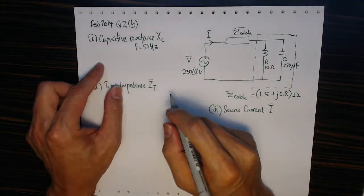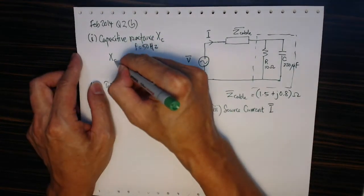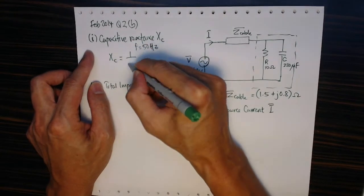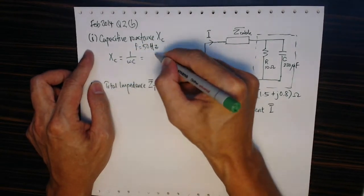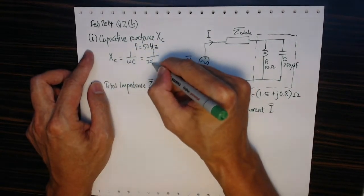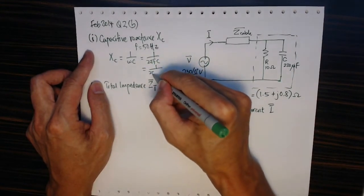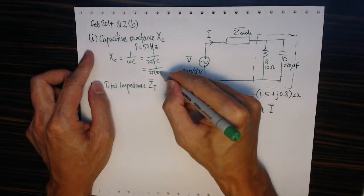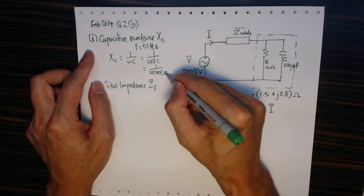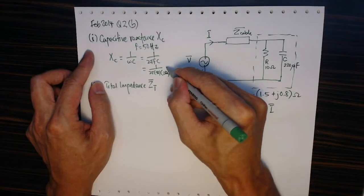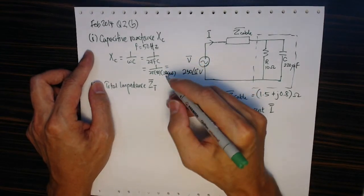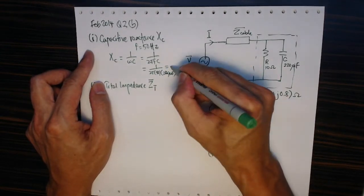So the capacitive reactance Xc is calculated by 1 upon omega C, which is 1 upon 2 pi fC. That gives me 2 pi times 50 times 220 microfarad, that gives me 14.47 ohms.